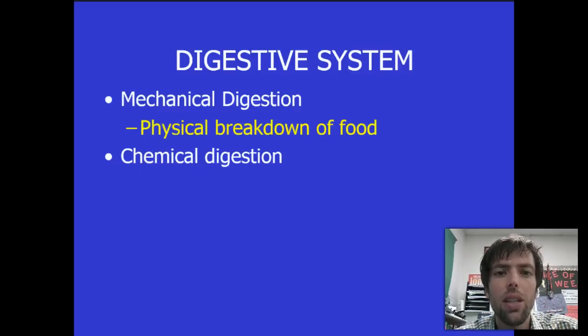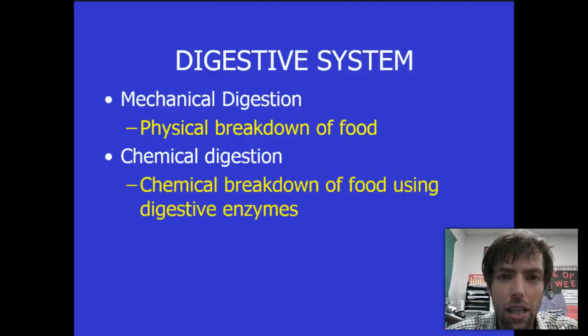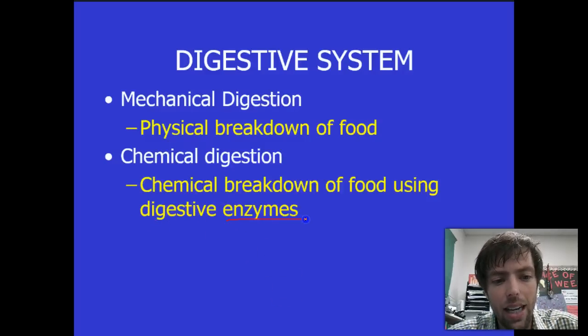For mechanical digestion, it is what it sounds like. It's the physical chomping of food. Now, obviously your teeth do this, but you're going to find out there are other body parts that also mechanically break down your food. And then there's chemical digestion, which you normally think of when you think about the digestive system. It's using those chemicals to break them down into smaller possible pieces. Now, here's a new word for you, and that word is enzymes.